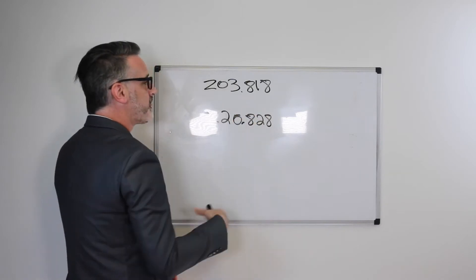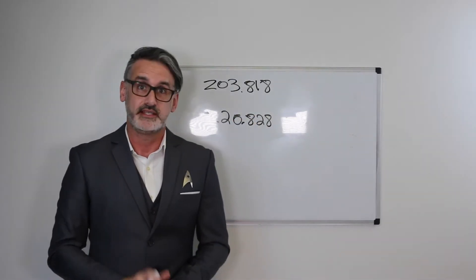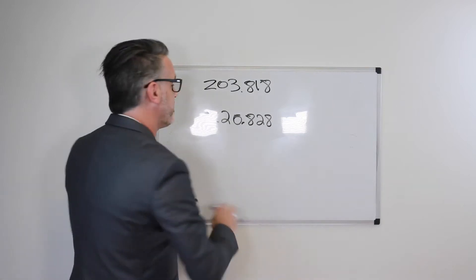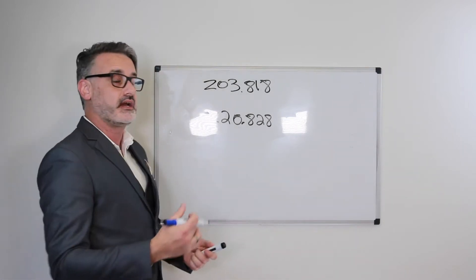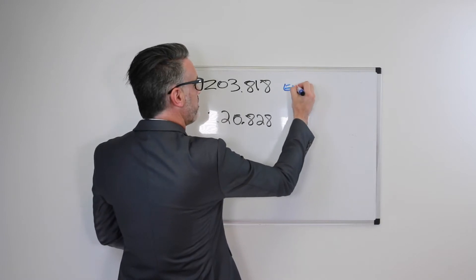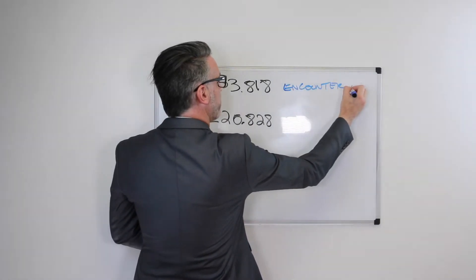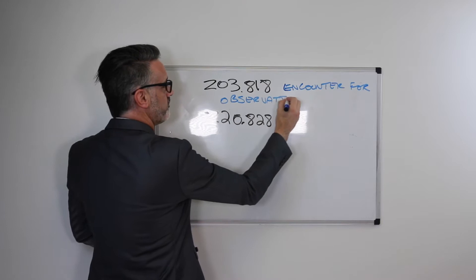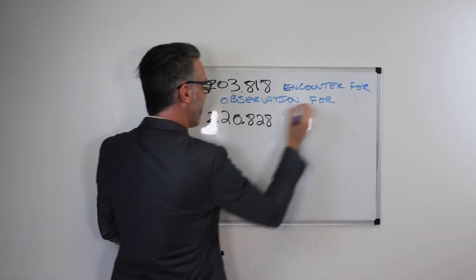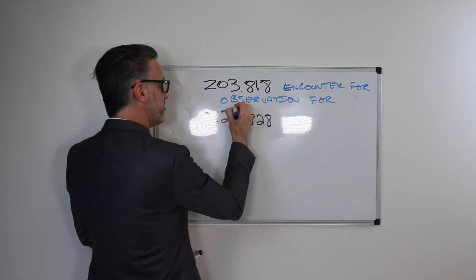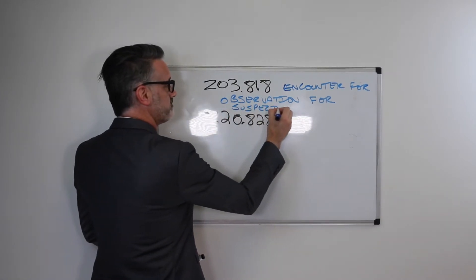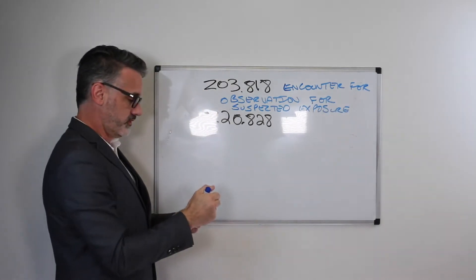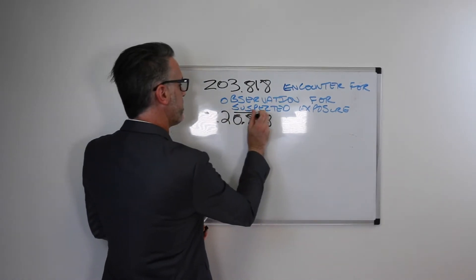These are the encounter codes that we use, so it's not a confirmed case at this point. As far as these two different codes, we would use Z03.818 when the patient comes in, when it is an encounter for observation for suspected, and the keyword there is suspected exposure. And I'm just going to underline the word suspected there to emphasize that.